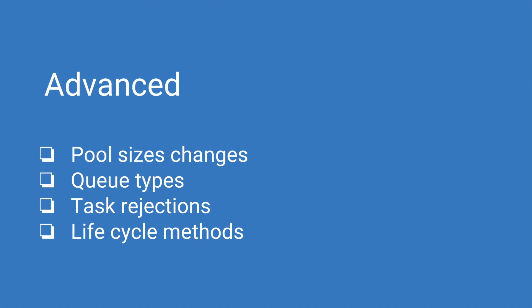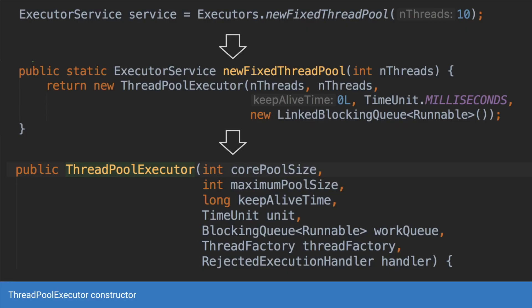Now let's look at the slightly advanced topics for the executor service. In the previous videos we looked at how to create a new fixed thread pool and the other types of pool. The method we call for that was very straightforward — we use a static method called executors dot new fixed thread pool or executors dot new cache thread pool, and that creates the thread pool for us.